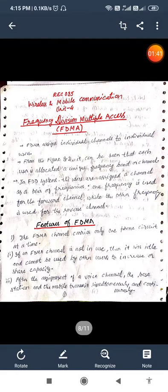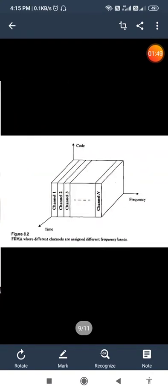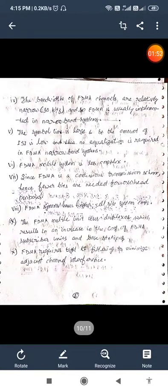After the assignment of the voice channel, the base station and the mobile transmit simultaneously and continuously. The bandwidth of FDMA channels are relatively narrow, that is 30 kilohertz approximately. FDMA is usually implemented in narrowband systems. The symbol time is large and so amount of ISI is low and thus no equalization is required in FDMA narrowband systems.